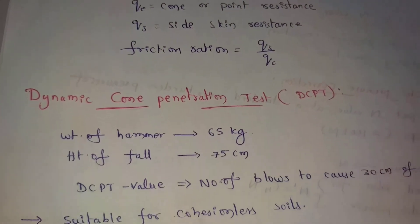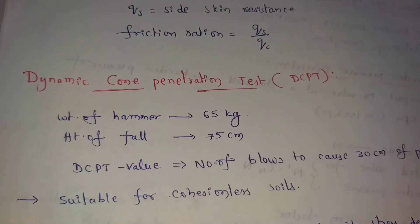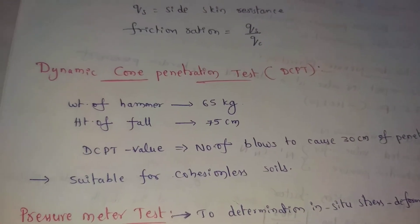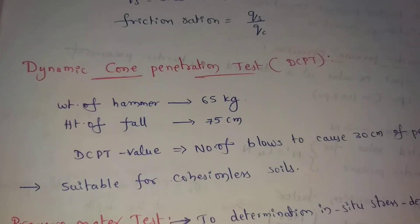For the Dynamic Cone Penetration Test, a hammer of 65 kg is used with a height of fall of 75 cm. The DCPT value is the number of blows required for 30 cm of penetration. This test is used for cohesionless soils.